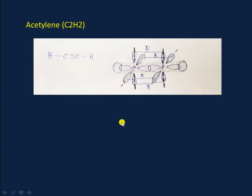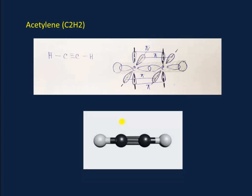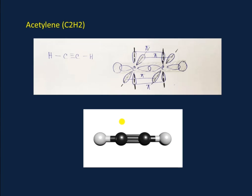Let's understand the orbital picture of acetylene, that is C2H2. In acetylene, both carbon atoms are sp hybridized and are linearly oriented. One sp hybridized orbital of each carbon atom overlaps head to head to form the carbon-carbon sigma bond. The other sp hybridized orbital is occupied by hydrogen atoms.